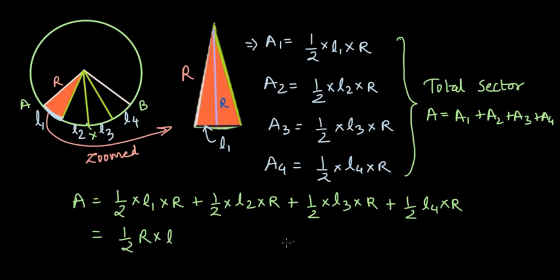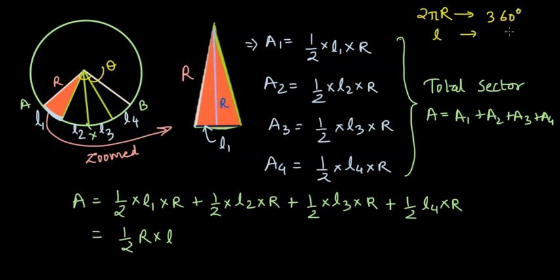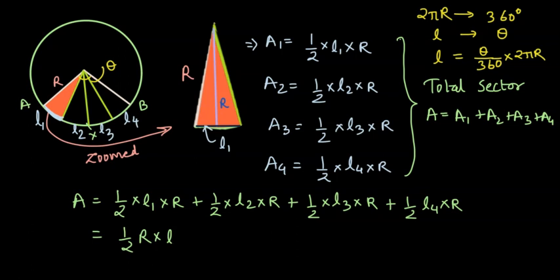So the total area would be given by ½ × R × L. Now this total curved length L is a part of the circumference, and the length of this arc depends upon what angle it subtends at the center. The sector makes theta degrees at the center, and the total circumference subtends 360 degrees. So 2πR subtends 360 degrees. To find L, we take the ratio of theta to 360 degrees and cross multiply, giving us L = (theta / 360°) × 2πR.